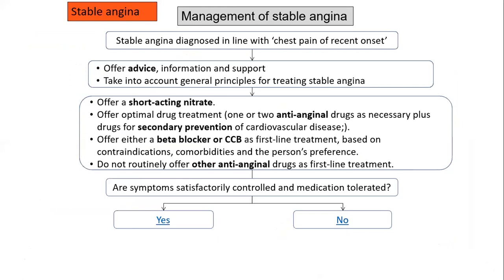After diagnosing stable angina, the next step is management. This includes advising the patient and providing information and support, general principles like lifestyle change, short-acting nitrates, optimal drug treatment for the angina, secondary prevention of cardiovascular disease, and whether to use beta blockers or calcium channel blockers and other anti-anginal drugs as first-line treatment. We then reassess whether there is satisfactory control and the medications are tolerated.